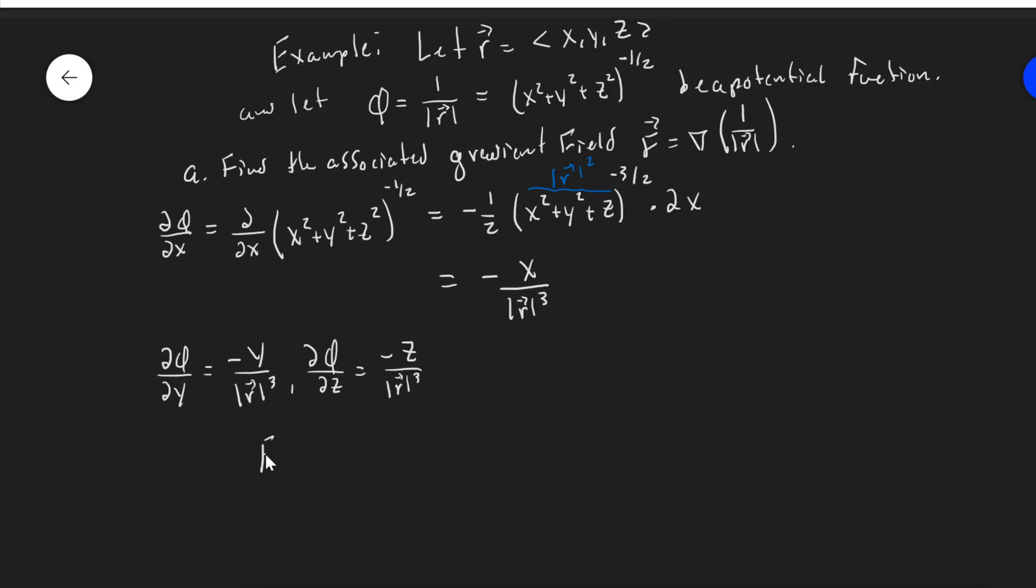Hence f, which is del of 1 over magnitude R, which is phi, it looks like minus x, y, z over magnitude R cubed. Or if I want, I can write that as negative R over magnitude R cubed.